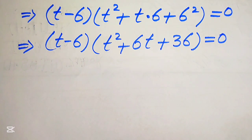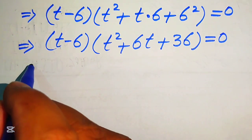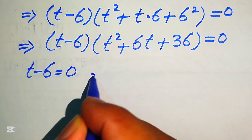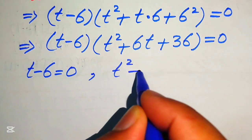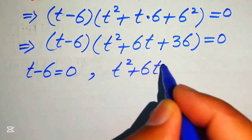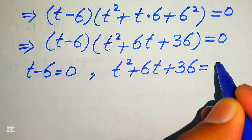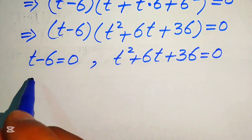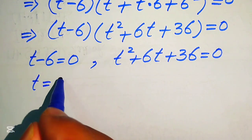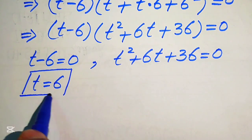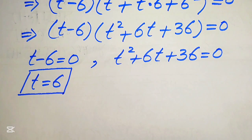Now we split this equation into two cases. The first case is t minus 6 equals to 0, and the second case is t squared plus 6t plus 36 equals to 0. From the first case we easily get t equals to 6, which is the first real solution of the given equation.